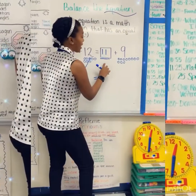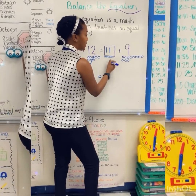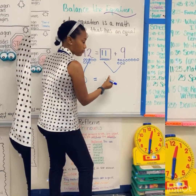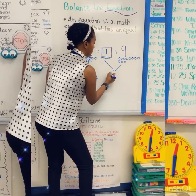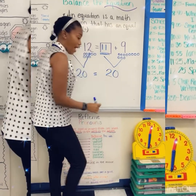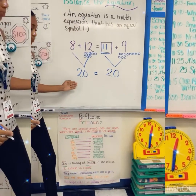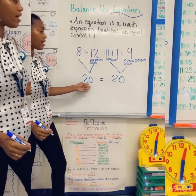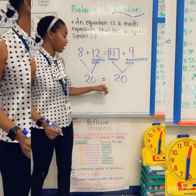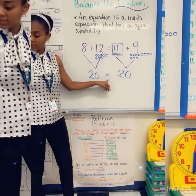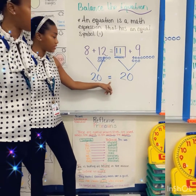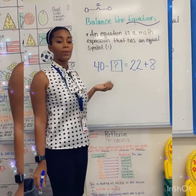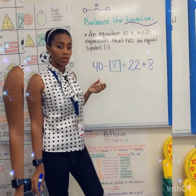So now that I have 11 plus 9, what is that going to equal? 20. Did I balance the equation properly? Yes. 20 on the left, 20 on the right, and I have my equal sign in the middle. So I did do it correctly. Good job. Let's try another example of balancing the equation.